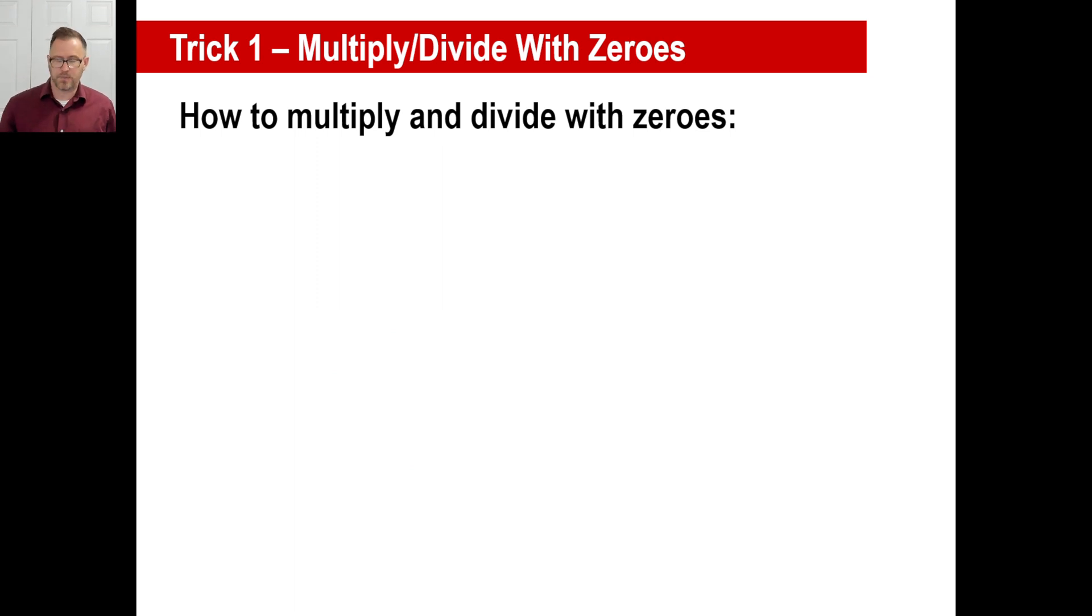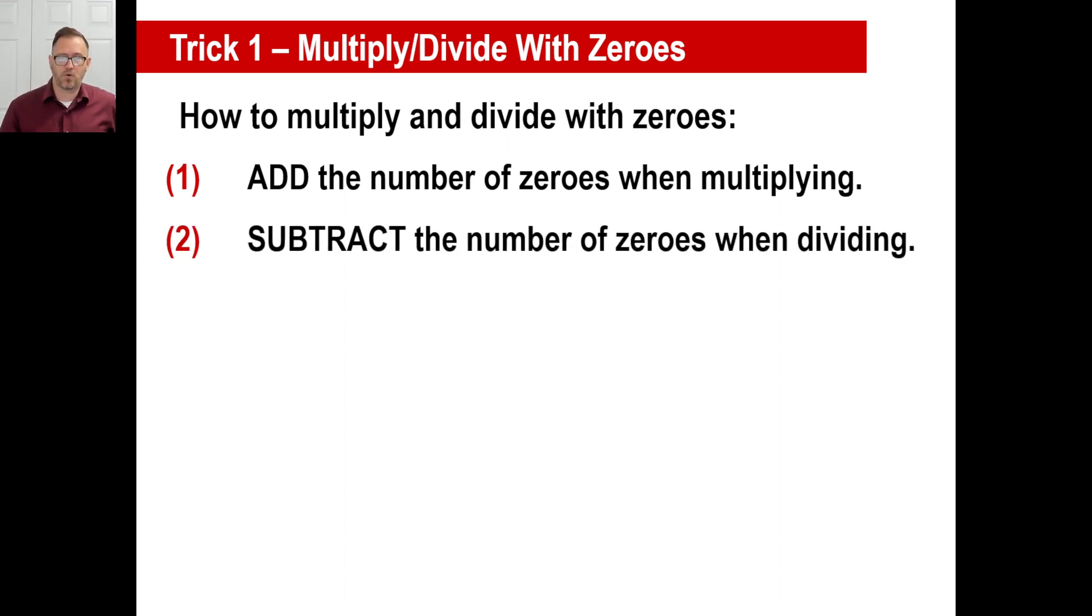First trick of the year. Get your pencil and paper out and write this down if you need to and make a note out of it. How to multiply and divide with zeros. Here's the trick. Number one: add the number of zeros when you multiply. Number two: subtract the number of zeros when you divide.